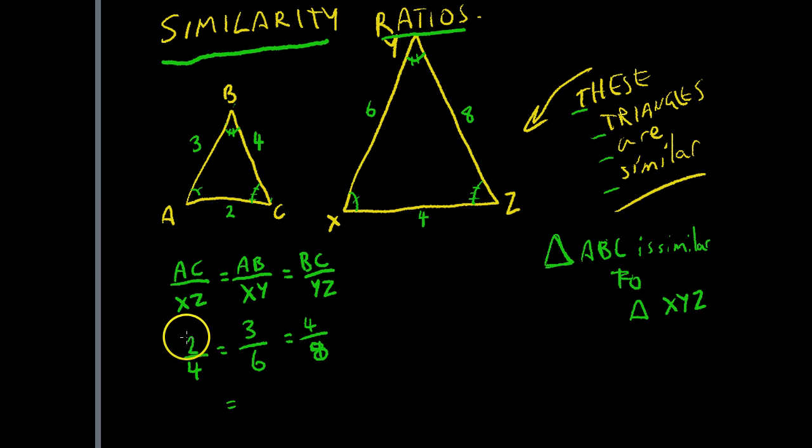Okay, and you can see that these fractions are all the same. If we were to simplify this fraction, we'd get one half. If we were to simplify this fraction, we'd get one half. These are our similarity ratios, and you can see that the ratio between this side and this side, this side and this side, and this side and this side, are all going to be equal.